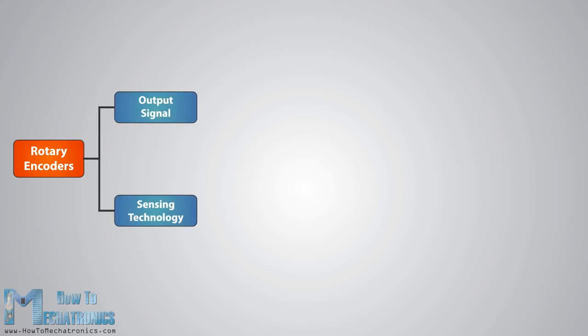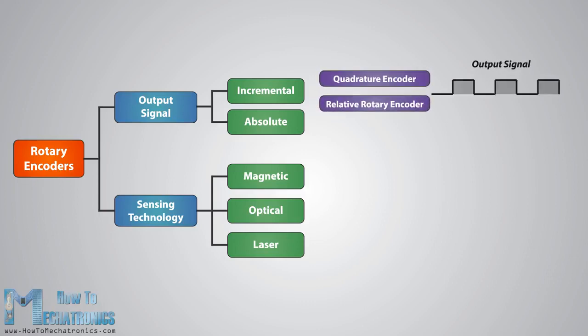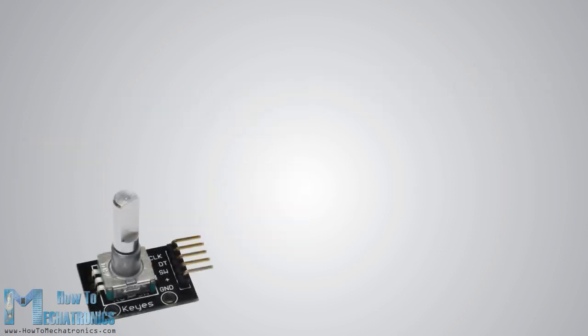The particular rotary encoder that we will use in this tutorial is an incremental rotary encoder and it's the simplest position sensor to measure rotation. This rotary encoder is also known as quadrature encoder or relative rotary encoder and its output is a series of square wave pulses. Let's take a closer look at the encoder and see its working principle.